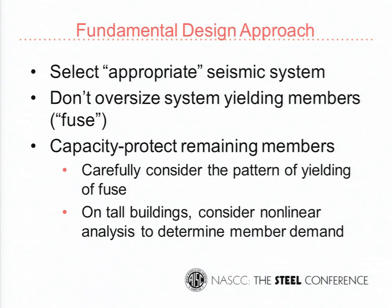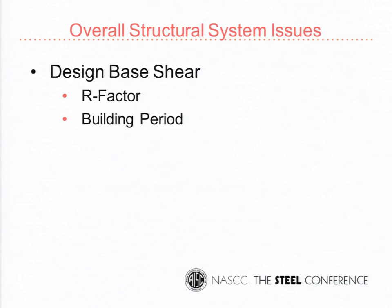On overall structural system issues from ASCE 7 Chapter 12: the higher the R factor, the lower the base shear, the lower your demands, and the smaller your fuse. Choose an R equal to 8 system if you can. For building period, there's a mandatory empirical minimum T_sub_A, but in most systems your period is larger than that value. Use the increased, more realistic period from a dynamic analysis — the empirical value is meant to be a conservative lower bound.